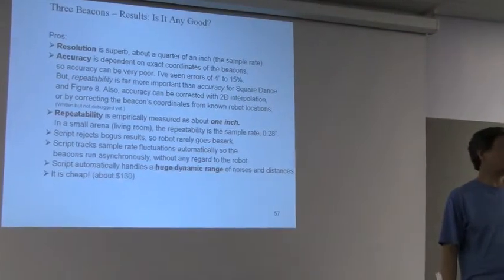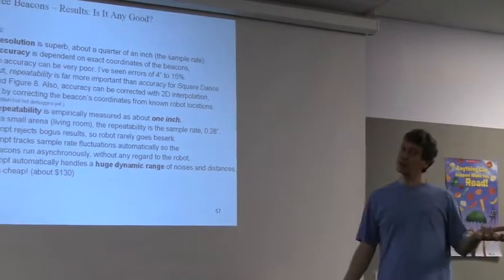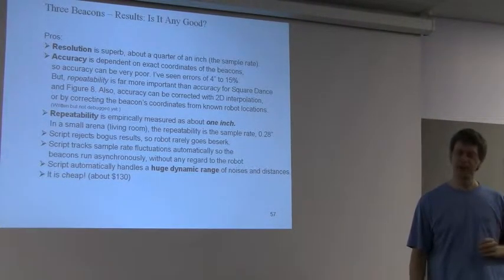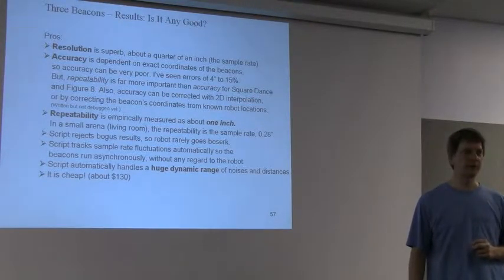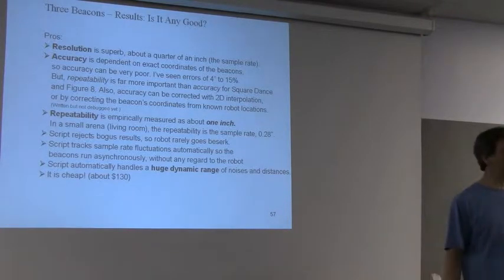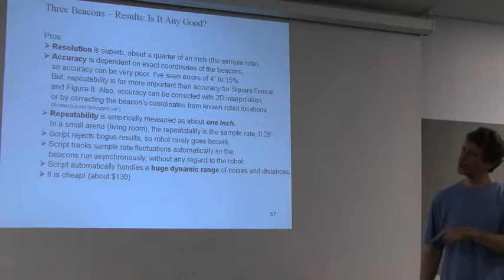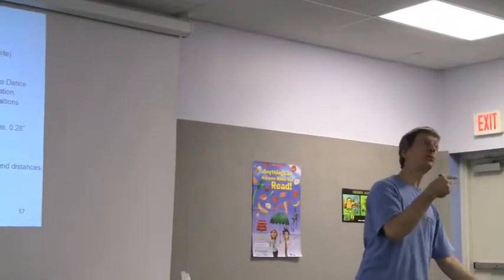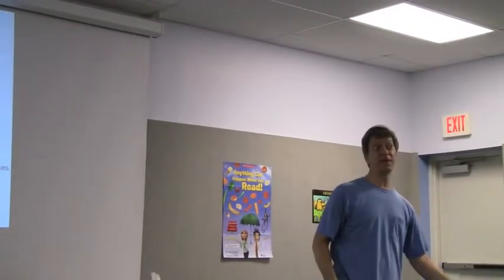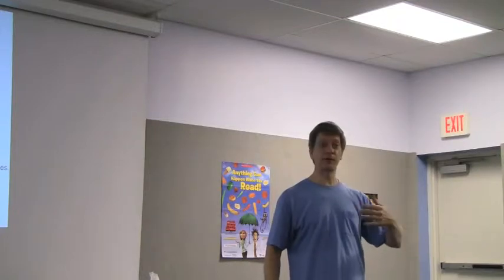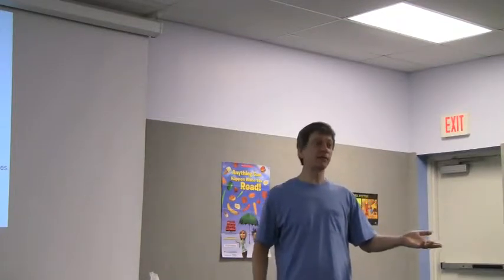So is any of this any good? Well, the pros are the resolution is as good as the sample rate. That's quarter inch, half inch. I think that's great. Again, the traditional wisdom is go at 200 kilohertz or 400 kilohertz and get the resolution even better for the A to D, I mean sorry, the D to A converter. I don't find that to be necessary. And also that would be dependent upon using directional transducers. And this is supposed to be omnidirectional in order for it to work. However, the accuracy is extremely dependent on how accurately you tell it where the beacons are.